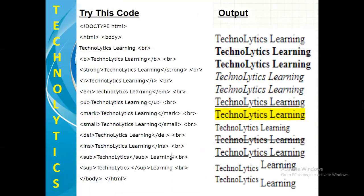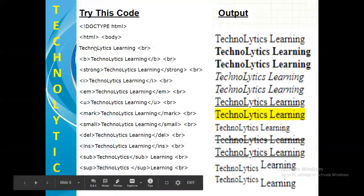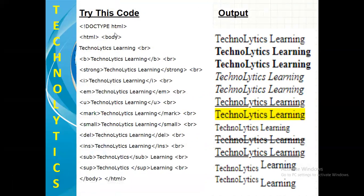Let's understand all these tags with the help of this example. On top, I have written exclamation DOCTYPE HTML just to inform the browser that we are using HTML version 5 or more than that. Then HTML for beginning of the HTML code, body for whatever we will write in the body tag will be displayed.